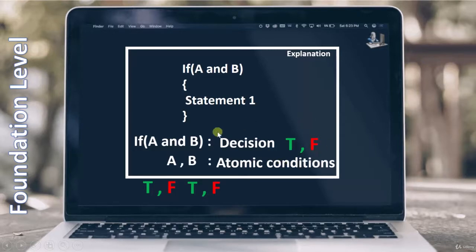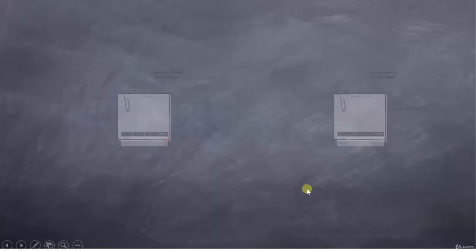So this was the major difference between decision testing and the condition testing. And when we are covering the decision testing, we don't care about what type of combination we are choosing from the atomic conditions. So our only focus is on covering true and false for the decision. And in order to understand this topic, we had two examples.